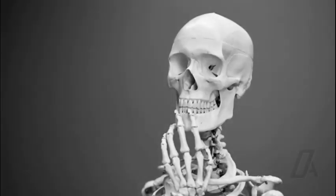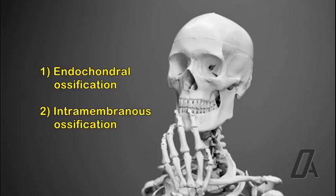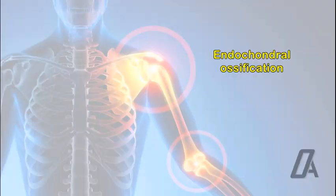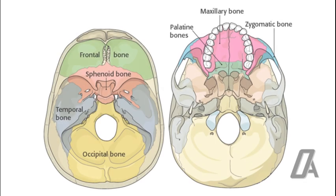Bone formation takes place by two basic methods: endochondral ossification and intramembranous ossification. Endochondral, or cartilaginous indirect bone formation, involves production of bone in areas where there are high levels of compression. It is seen in the cranial base and in movable joints.